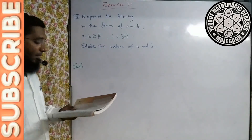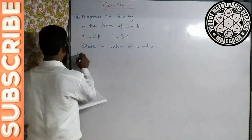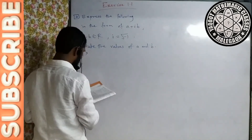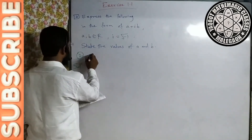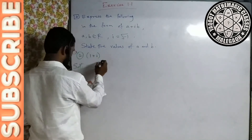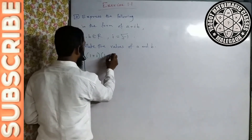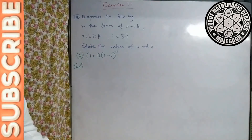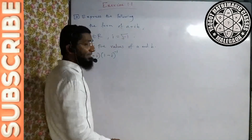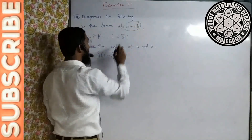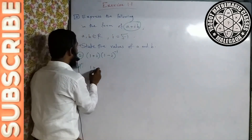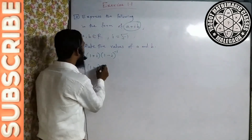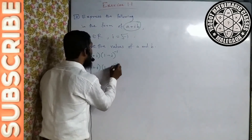Second question: (1 + i) into (1 − i) raise to the power minus 1. Isse bhi a plus ib ke form mein express karna hai. (1 + i) multiplied by (1 − i) ka minus 1 power.